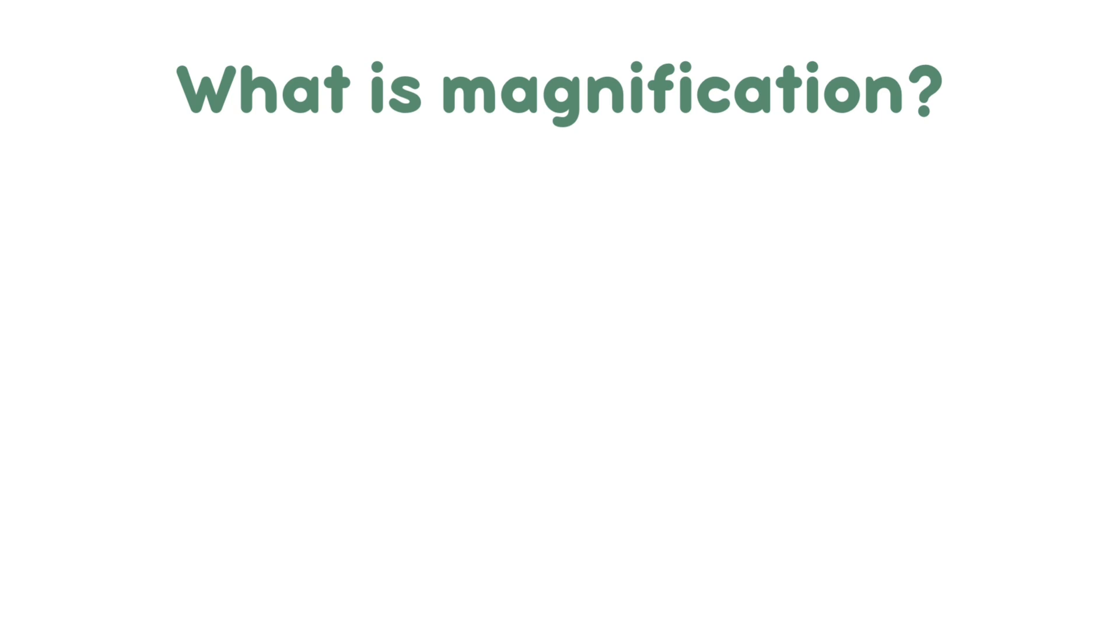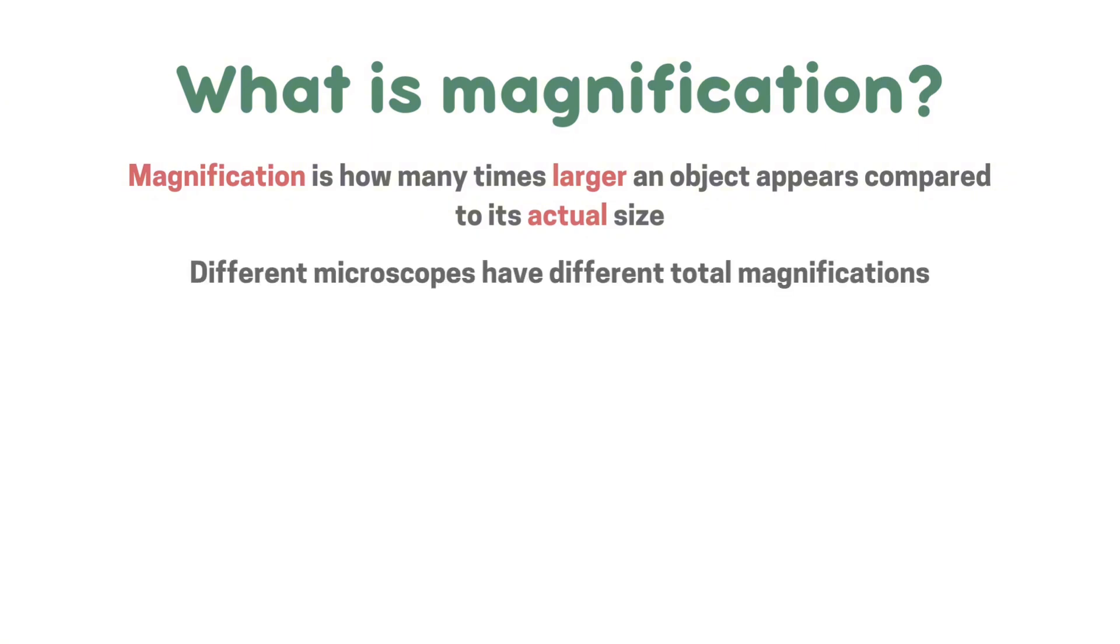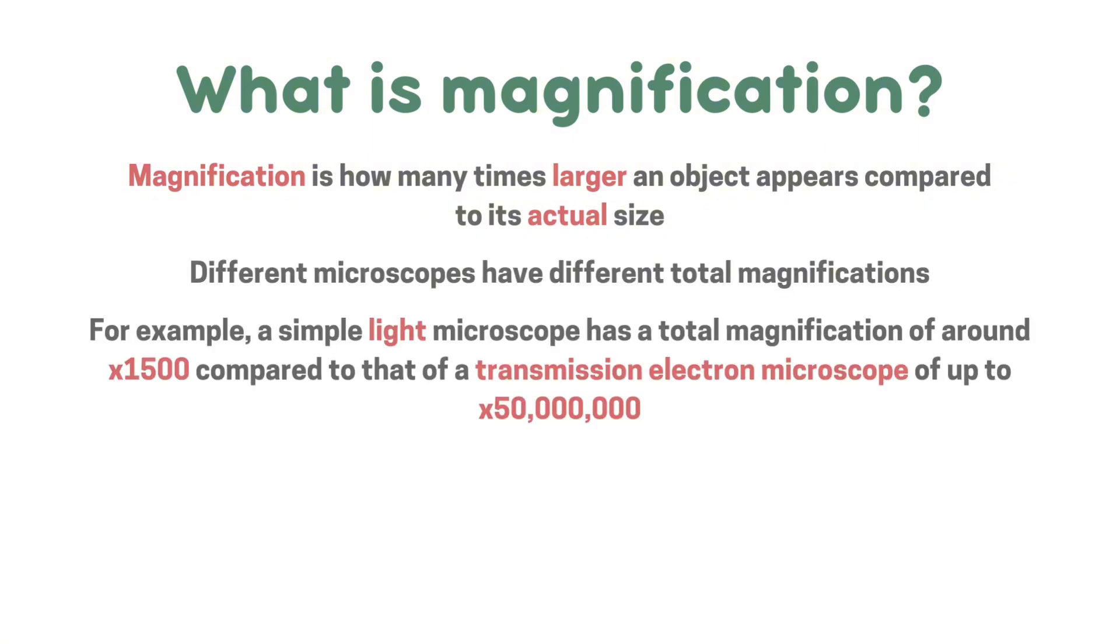First off, what is magnification? Magnification is how many times larger an object appears compared to its actual size. Different microscopes have different total magnifications. For example, a simple light microscope has a total magnification of around times 1,500 compared to that of a transmission electron microscope of up to 50 million. We will dive into magnification calculations next.